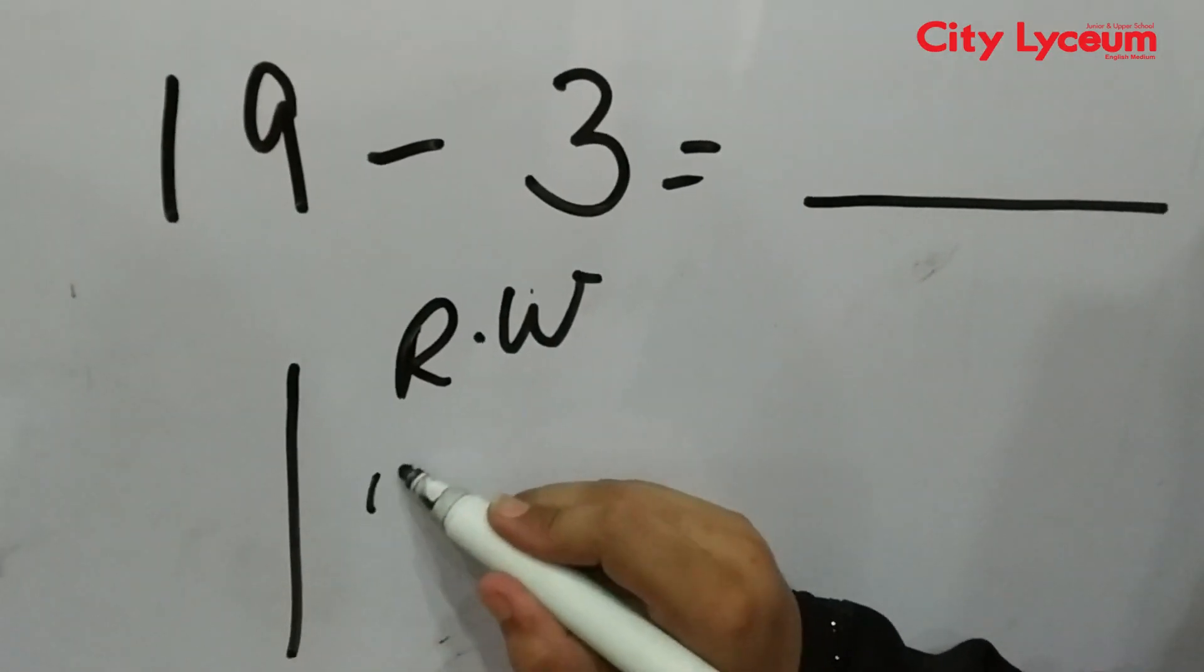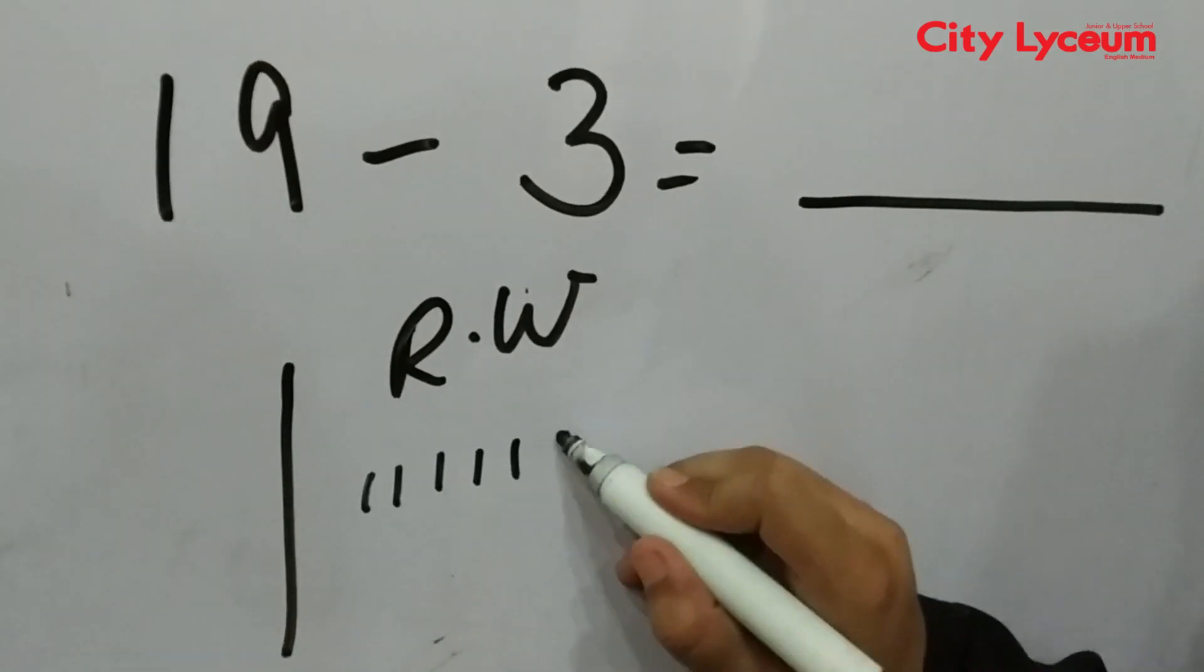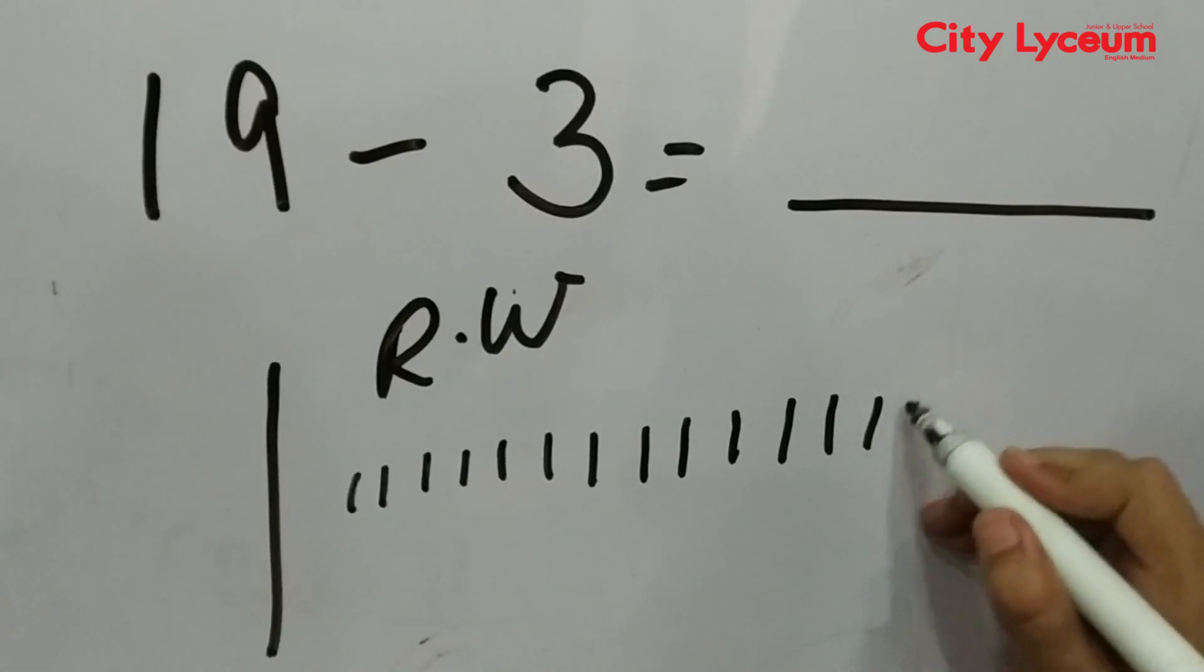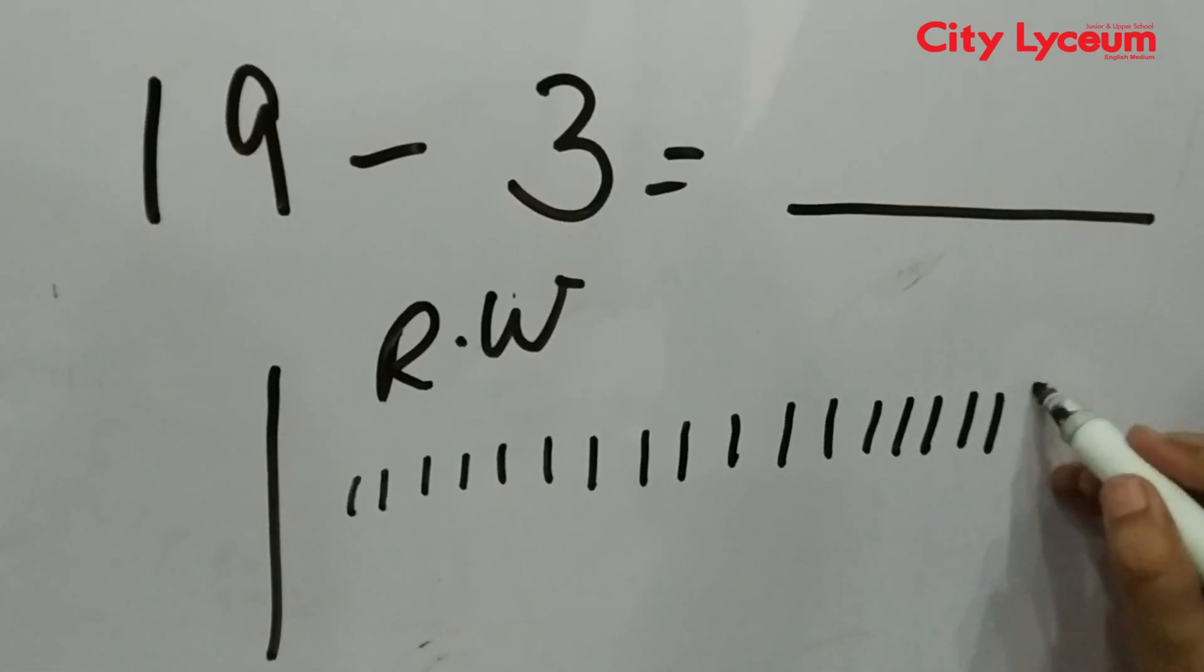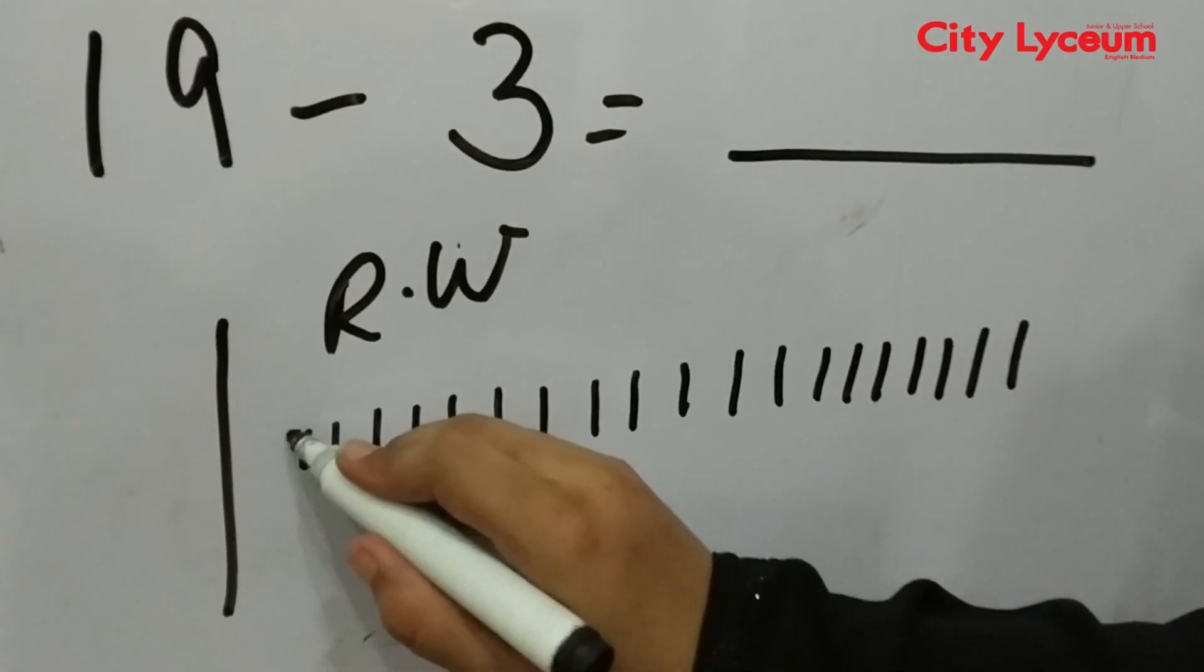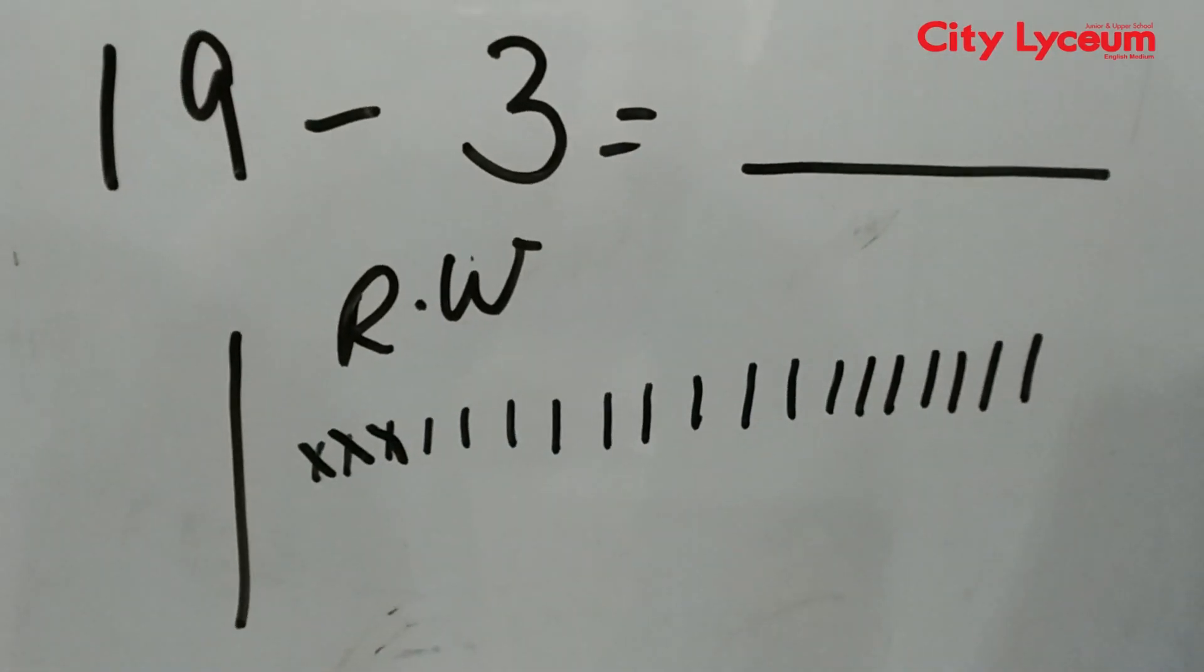Now we have to write 19 lines: 1, 2, 3, 4, 5, 6, 7, 8, 9, 10, 11, 12, 13, 14, 15, 16, 17, 18, and 19. We will cut off 3 lines. We have to cut 3 lines.